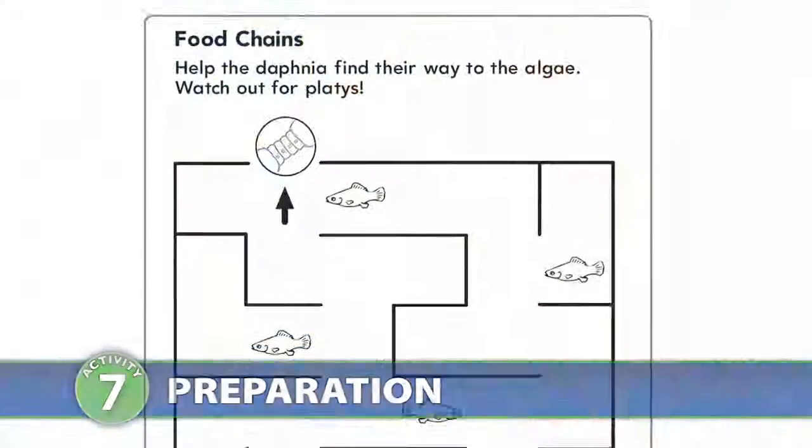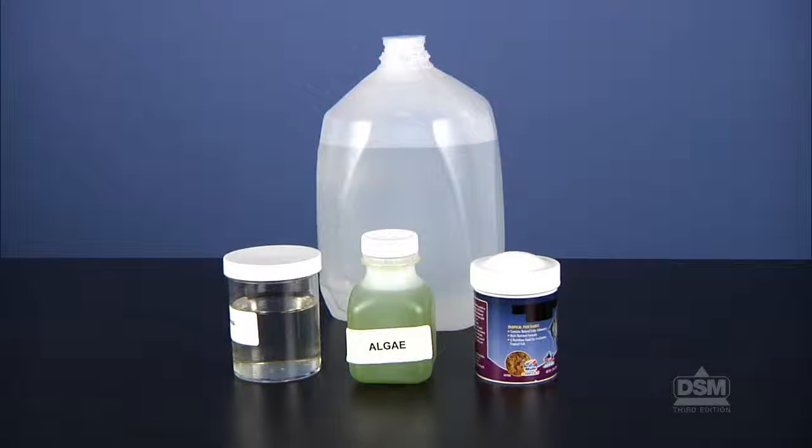To prepare for this activity, make a copy of activity sheet seven, parts A and B, for each student. Do not feed the daphnia for 24 hours to ensure that they will eat when fed during this activity. Place the daphnia, the algae, a jug of spring water, and the fish food at a distribution station.